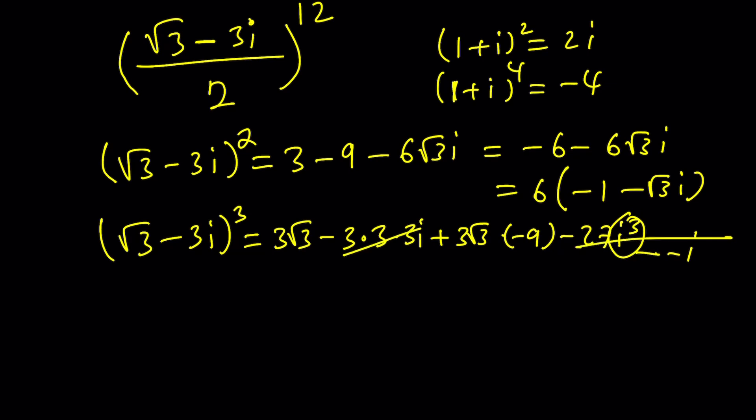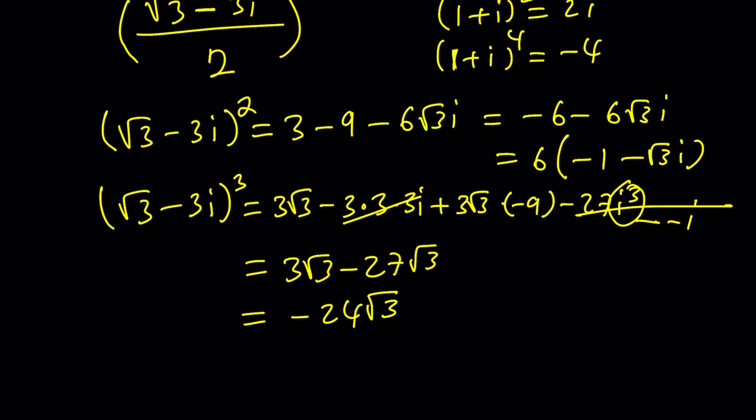And that is a negative 27i. So these two are going to cancel out. Leaving us with something nicer. This is going to be 3 root 3 minus 27 root 3. And it's going to be negative 24 root 3. So that's kind of nice. Because from the cube I was able to get at least a rational number. A real number. Right? Great.